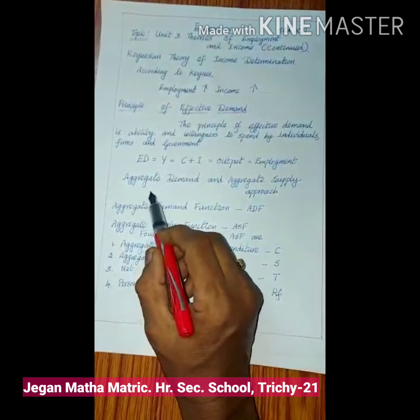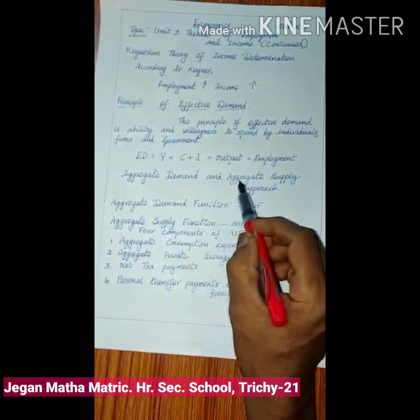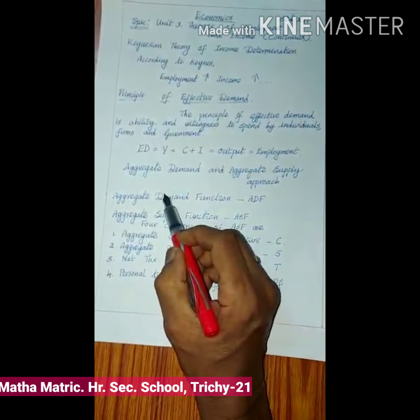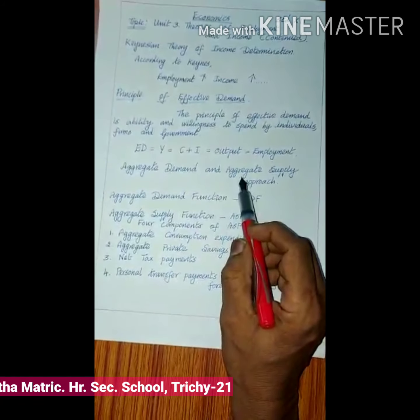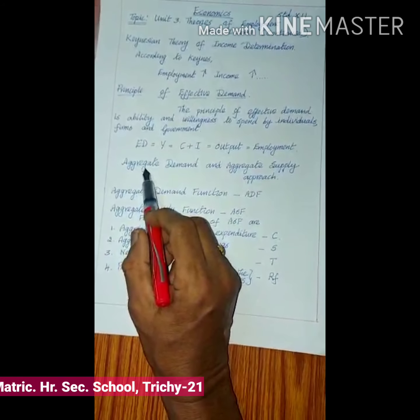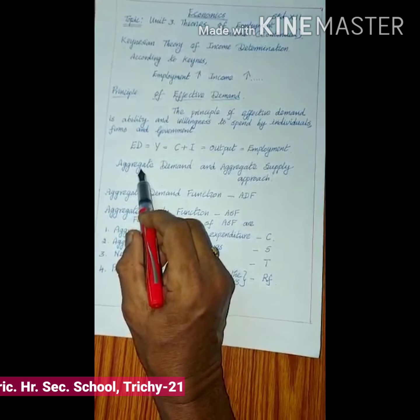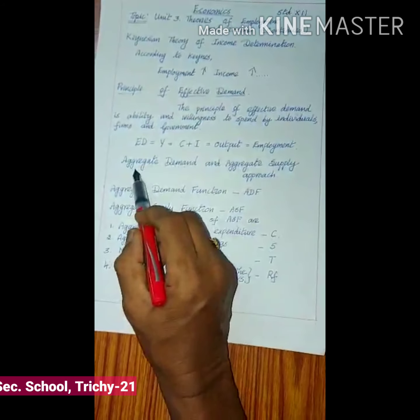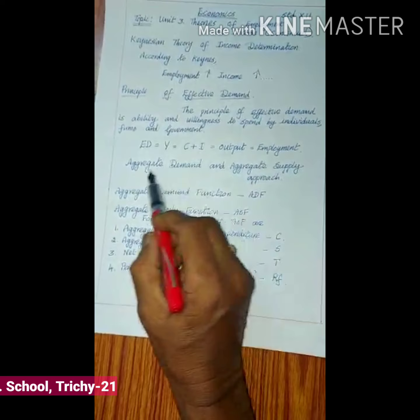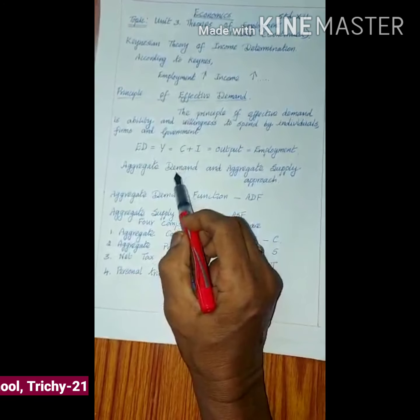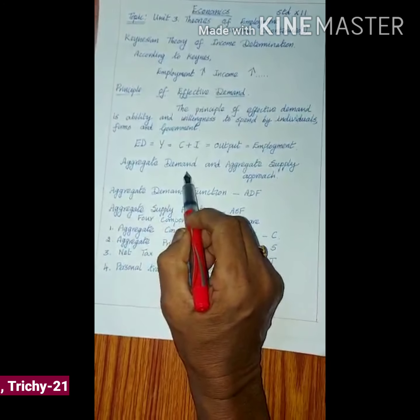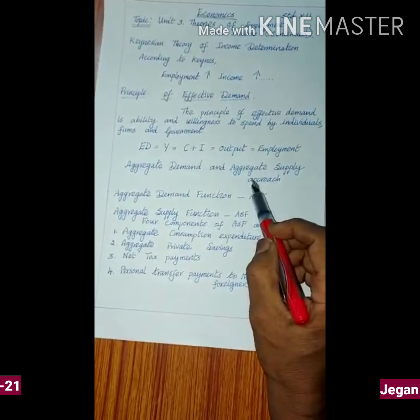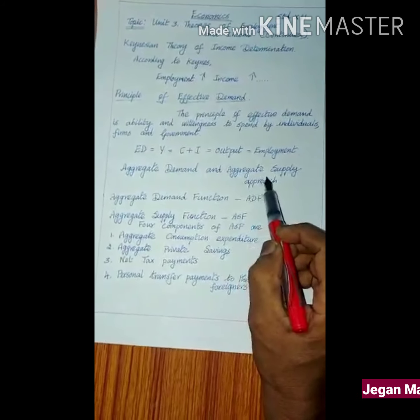Keynes used aggregate demand and aggregate supply approach to explain his simple theory of income. Aggregate means any quantity that is a grand total for the whole economy. Aggregate demand is the total demand for all goods and services in the economy, and aggregate supply is the total commodities supplied in the economy.